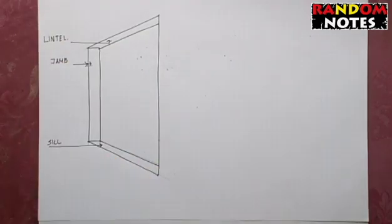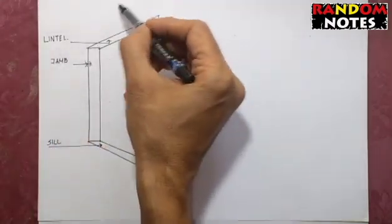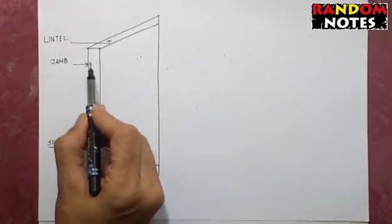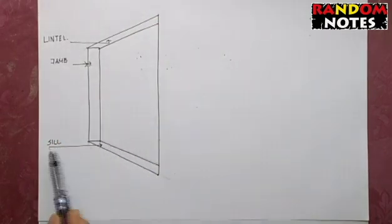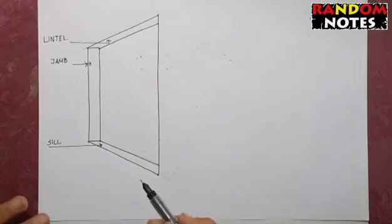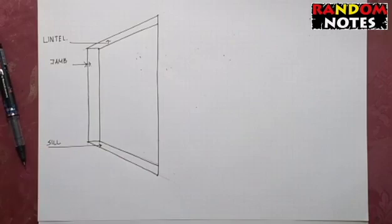The lintel takes the load of the wall above. The two vertical surfaces are the jambs, one in front and one behind this line, and then of course the sill below, which there is a wall that goes up to the floor line.